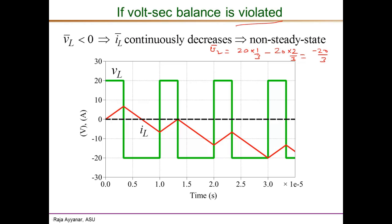In response, the inductor current has the same rising slope of 20/L, but now the falling slope is −20/L. Because the current falls at the same magnitude slope but for a much longer duration than it rises, the current reaches a much more negative value than where it started. In the next cycle, it starts from that negative value, rises, then falls further. The average current is monotonically decreasing — the waveform does not repeat cycle after cycle, so this is not in DC steady state.